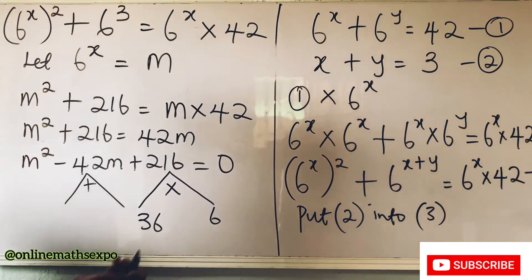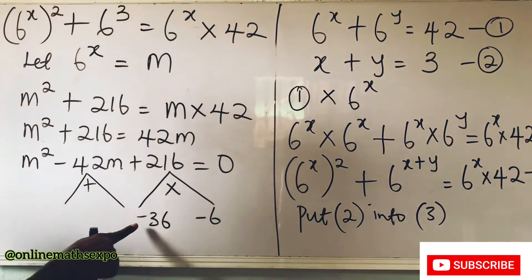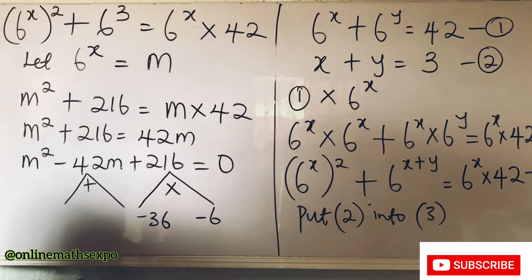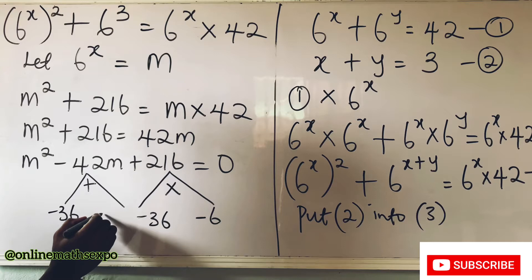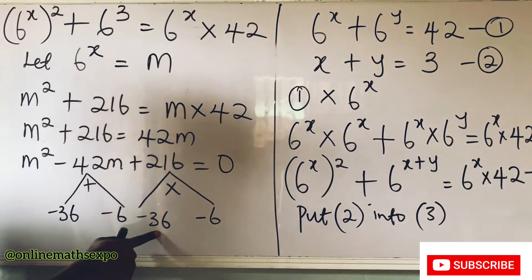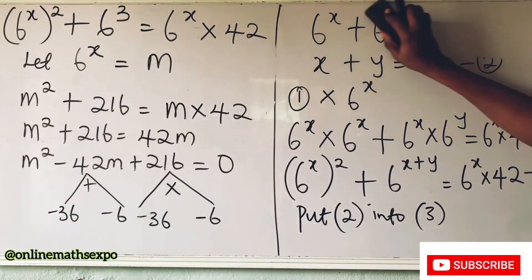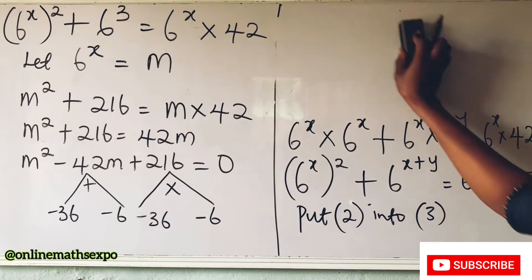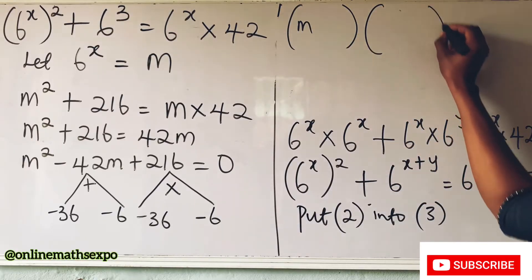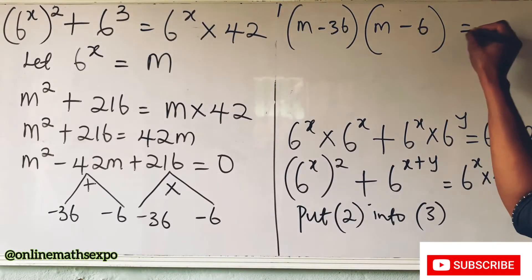The two factors are 36 and 6, because 36 times 6 equals 216. With negative signs: negative 36 and negative 6 — multiplying two negatives gives positive 216, and adding them gives negative 42. So we write two brackets: (m minus 36)(m minus 6) equals zero.